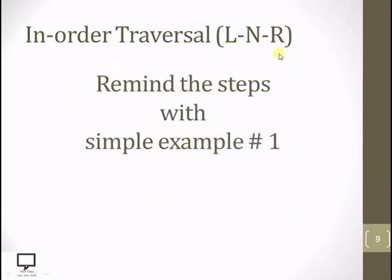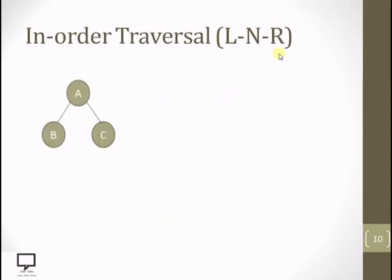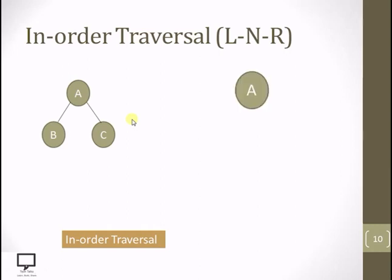Now let's start with the example. The steps are: left, root, right. Starting with the root node, we check whether it has a left child. If it does, step down to the left. Here, A has a left child, so we step down to B and make B the current root. I am showing this figure for reference to check every time whether the current root has a left or right child.